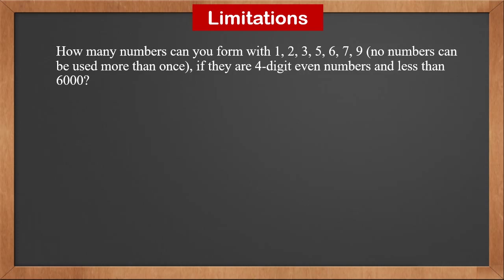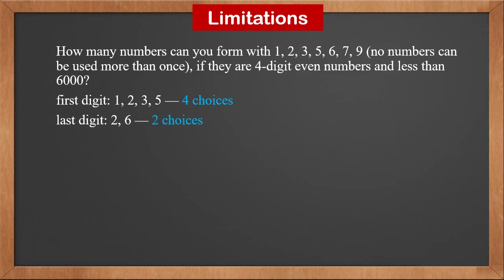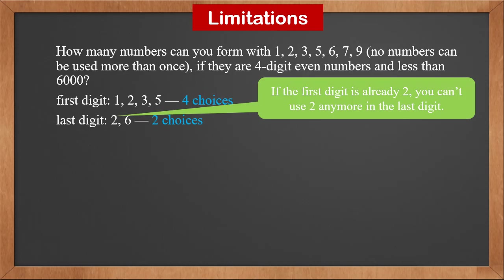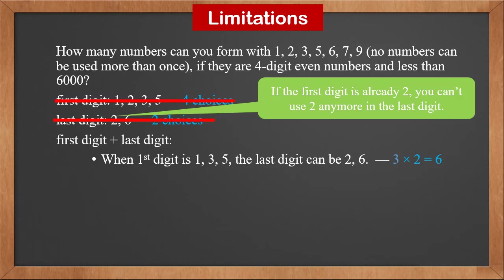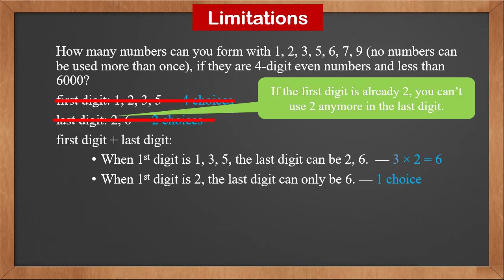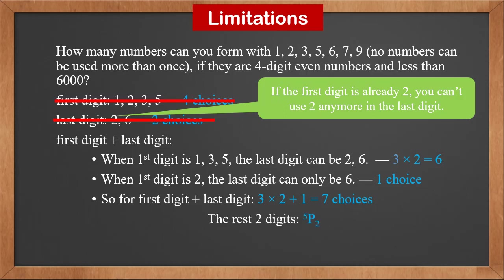For the same set of numbers, now we want to form four-digit even numbers that are less than 6000 — so there are two limitations. We first consider the first digit: since they are less than 6000, it can only be 1, 2, 3, or 5. Then the last digit: because they are even numbers, it can only be 2 or 6. But since no number can be used more than once, if the first digit is already 2, you cannot use 2 again in the last digit. Therefore, we consider first and last digit together. When the first digit is 1, 3, or 5, the last digit can be 2 or 6 — that is 3 × 2 = 6 choices. When the first digit is 2, the last digit can only be 6 — that is 1 choice. So for first plus last digit combined, there are 7 choices. For the remaining two digits, we use any of the remaining five numbers: that is 5P2. So the answer is 7 × 5P2, which is 140.